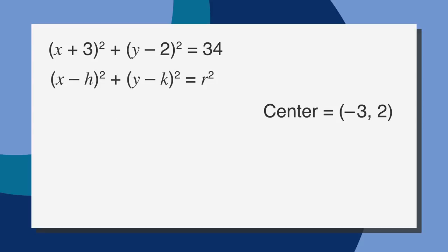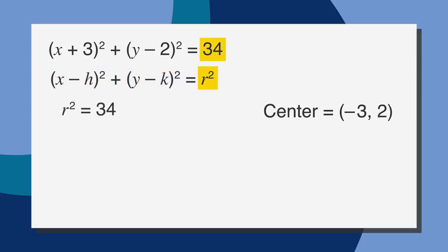We can also find the length of the radius. Remember, the equation tells us that x minus h squared plus y minus k squared equals r squared, where r is the radius. In this case, we know r squared equals 34, so the radius of the circle is the square root of 34.